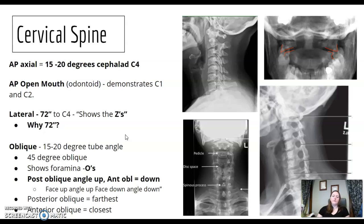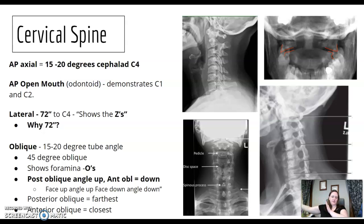OID — if the patient is standing up against that wall stand, their shoulder is here but their spine is farther away. We have to compensate for the increased OID by increasing our SID to 72 inches.